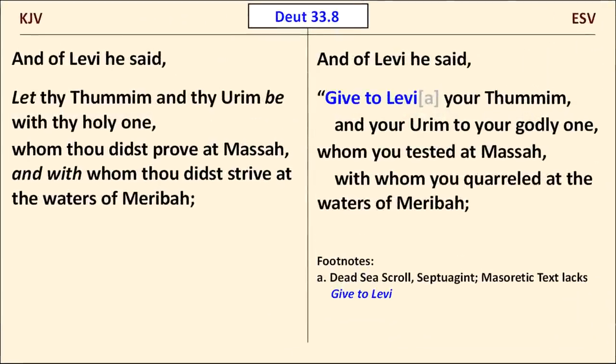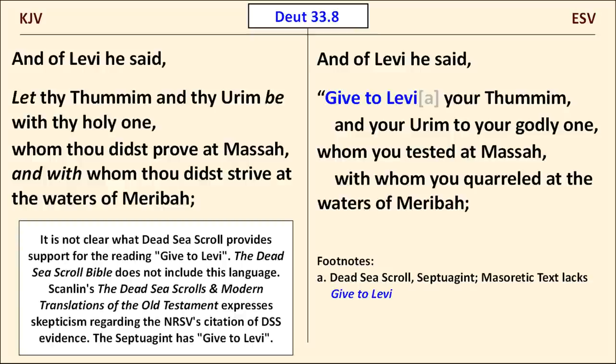In Deuteronomy 33:8, we find a minor difference. The ESV includes the words "Give to Levi," and a footnote attributes those words to a Dead Sea Scroll and the Septuagint. The Revised Standard Version included "Give to Levi" based on the Septuagint, and the New Revised Standard Version also includes it, attributing the words to the Dead Sea Scrolls and Septuagint — though it isn't clear which Dead Sea Scroll contains these words. Whether the change makes any material difference in the meaning of the passage, I leave to the viewer to decide.